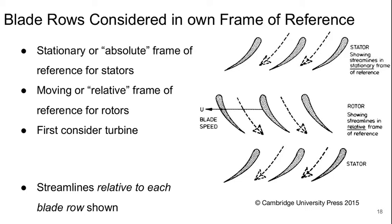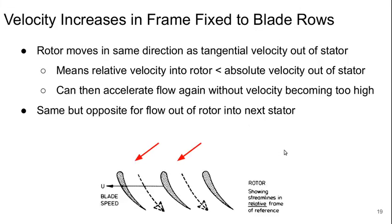Now we consider each blade row in its own frame of reference. If we're dealing with stators, we deal with the stationary or absolute frame of reference, and a relative or moving frame of reference for rotors. So let's first consider turbines. These are a little easier to think about. What we see here in this picture are the streamlines relative to each blade row. So in the stator, these are absolute streamlines. In the rotor, these are relative streamlines.